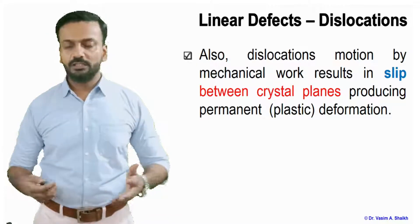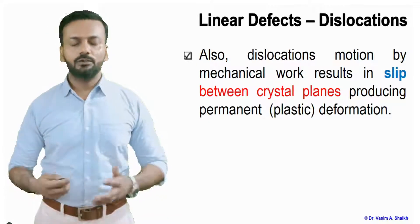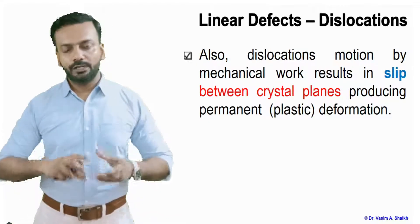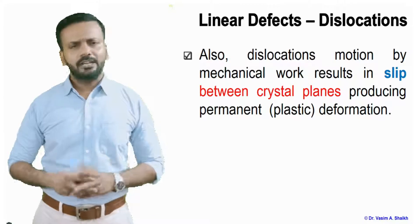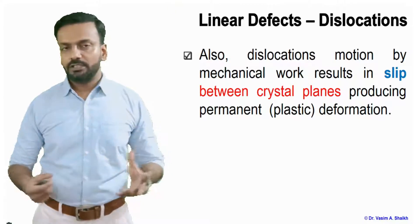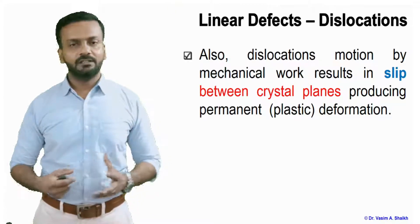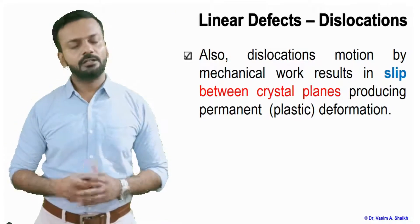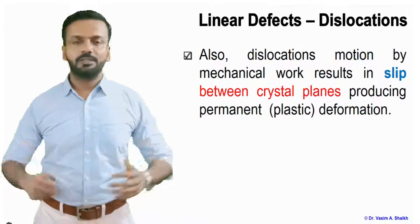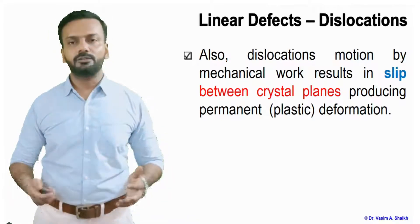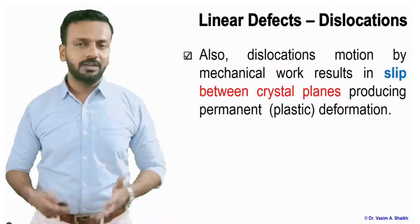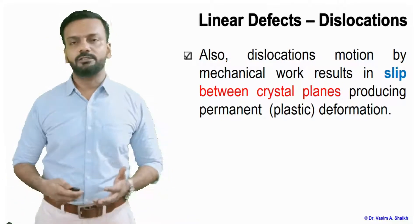Without dislocation, we cannot deform the material. If dislocation is not there, the material cannot change its shape and size, and when you apply too much load it will basically fail. So we want dislocations for plastic deformation.